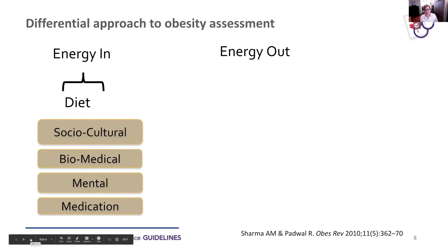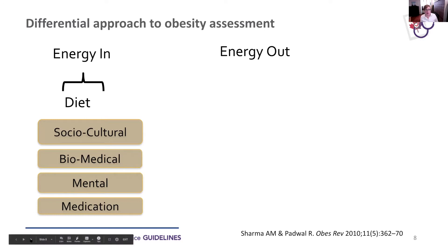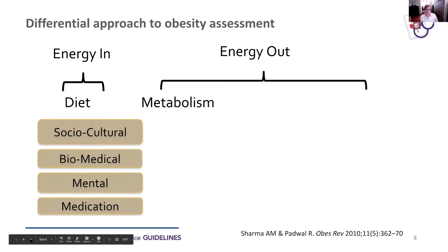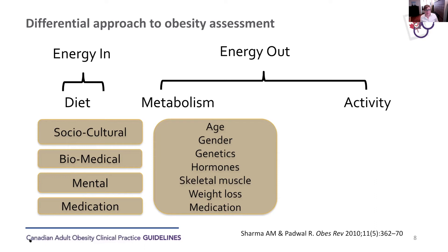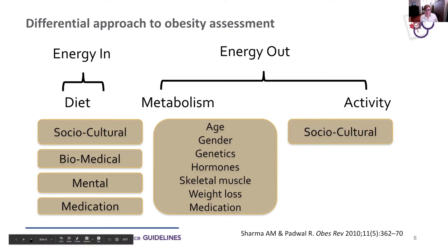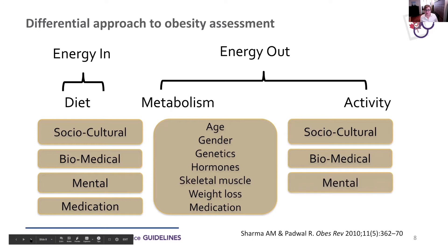Sociocultural context is important because we eat for many reasons other than just to sustain our bodies — there are cultural and communal reasons why we eat, and those are really important for our health as well. In terms of energy out, there's our metabolism — certainly as we age we have real differences in how our bodies handle energy. And then in terms of activity, again there are sociocultural norms, biomedical issues, mental issues, and medication.